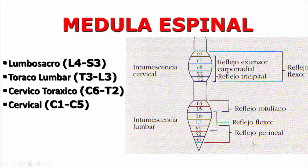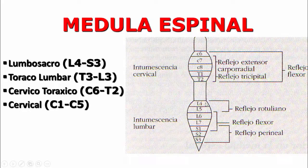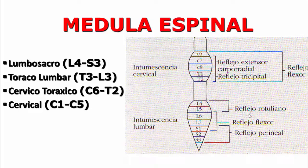Para el miembro pélvico tendremos el reflejo rotuliano. El reflejo rotuliano surge del segmento medular L4, L5 y L6. La gran mayoría de autores manejan el lumbar 4, lumbar 5 y lumbar 6. Es el reflejo que más fácilmente me da respuestas, por lo cual es el que más evaluamos.